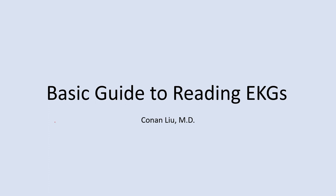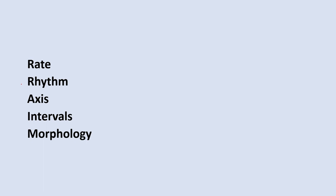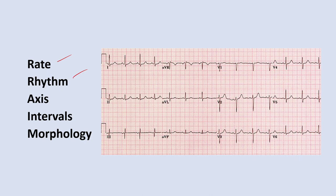This is your basic guide to reading EKGs. Every time you approach an EKG, you need to approach it in the exact same manner every single time, and that's by following these five steps: rate, rhythm, axis, intervals, and morphology. This is how it's always going to be taught in medical school, and every single time an attending hands you an EKG, you need to go step by step through this process and show them that you know how to approach this in a systematic manner.